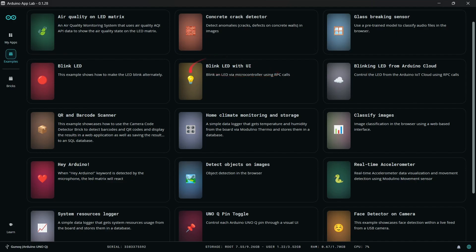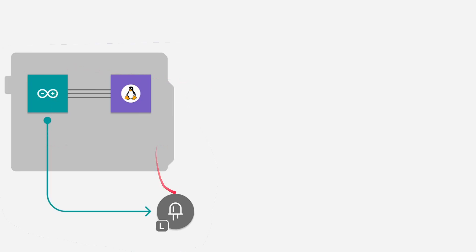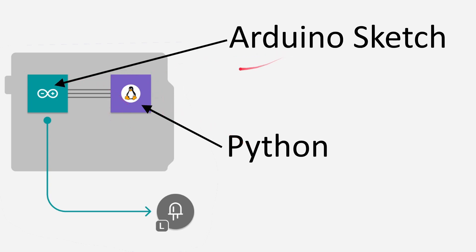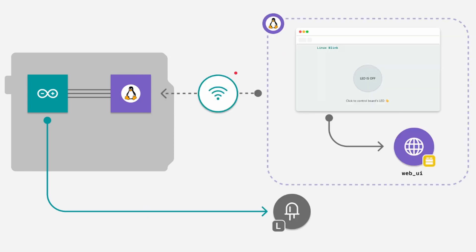So here's the Blink LED example. We've got the LED, and here are the two processors. On the Linux side it runs a Python script — so you're writing that side in Python. On the other side you write an Arduino sketch. What we've got is a web browser page being served by the Linux portion — a web UI with a button you can press. There's Wi-Fi, so you can serve this page over Wi-Fi; this is all done by the Linux side. Once you want to do something, it talks to the microcontroller and turns that LED on or off.